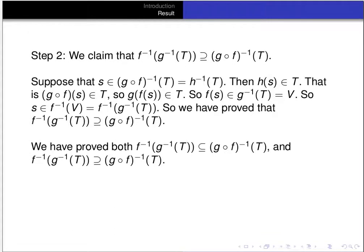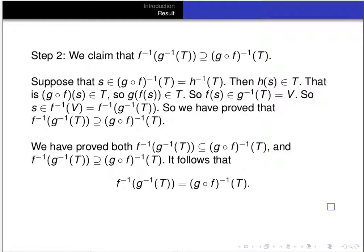Now we've proved set inclusion goes both ways, so the two sets are equal: the pre-image under f of the pre-image of T under g equals the pre-image of T under g composed with f. And that's it for this video. Thanks for watching.